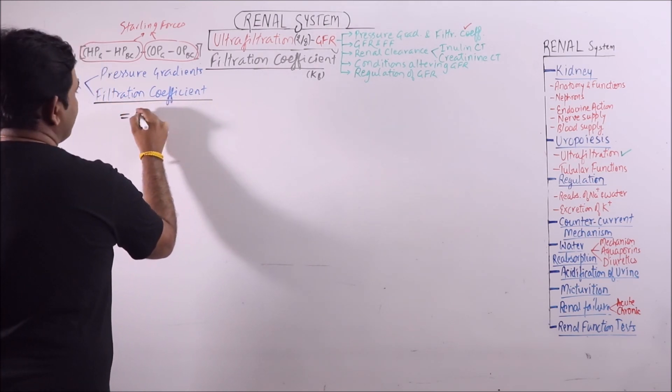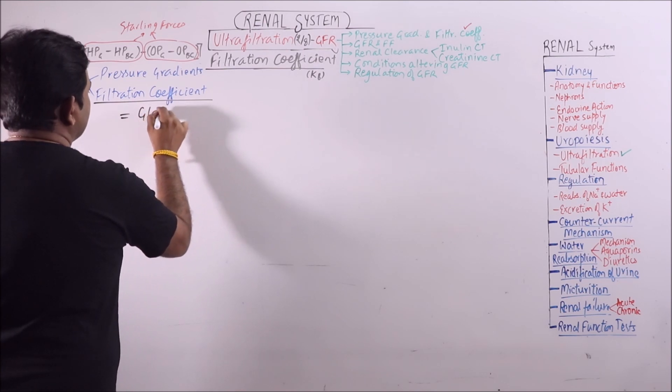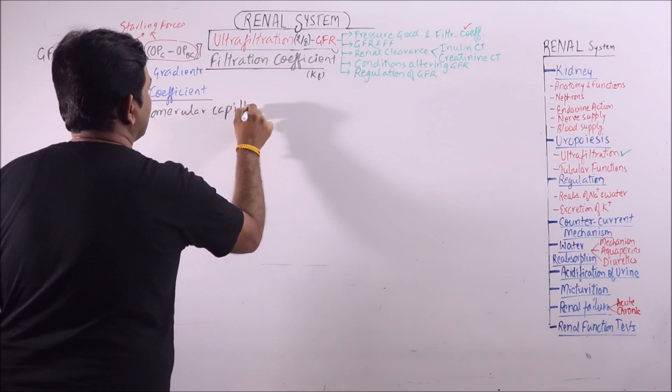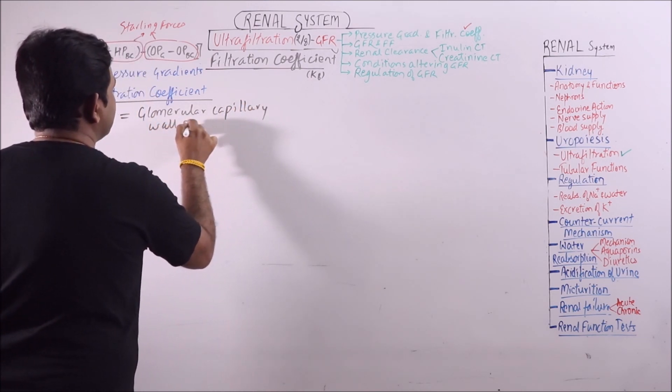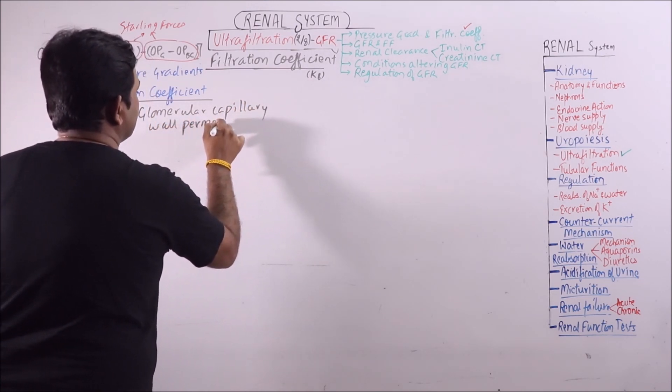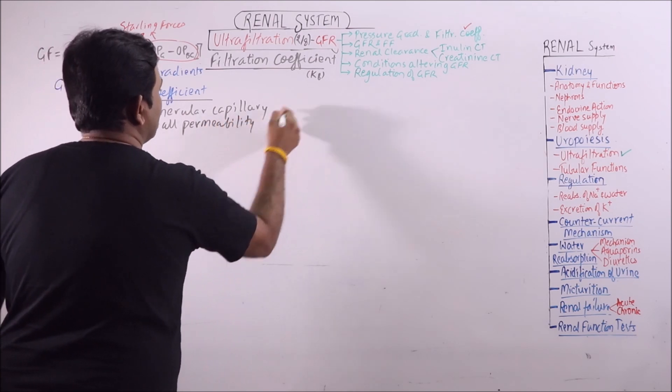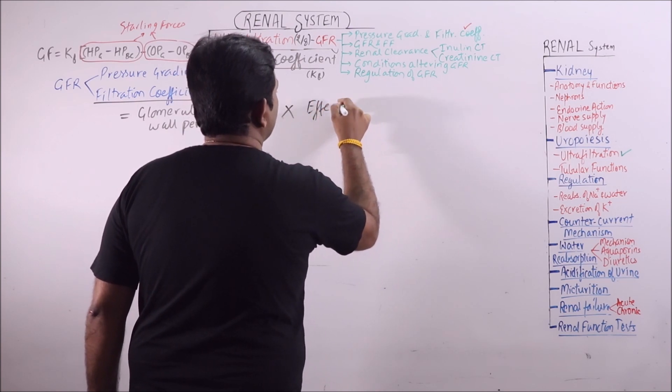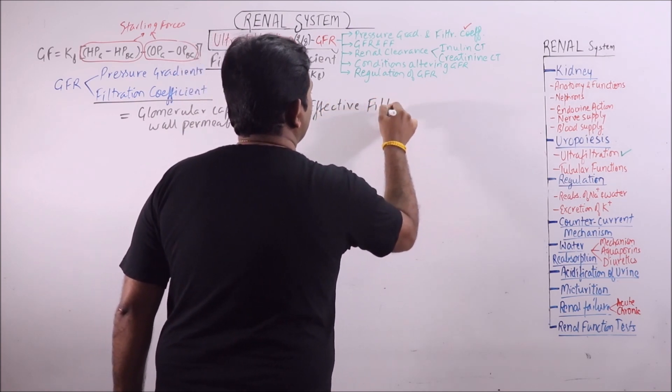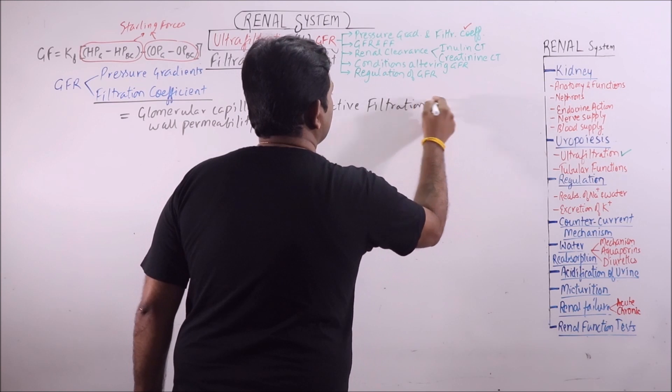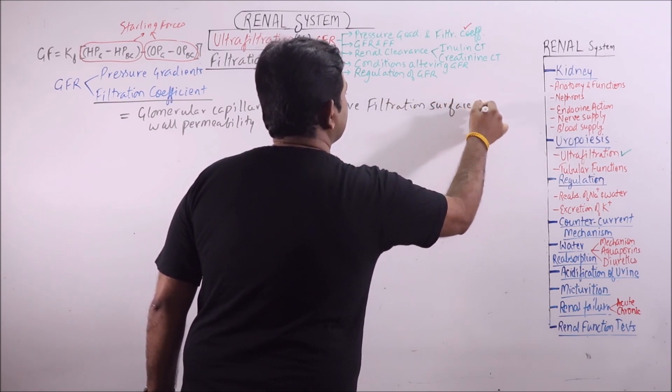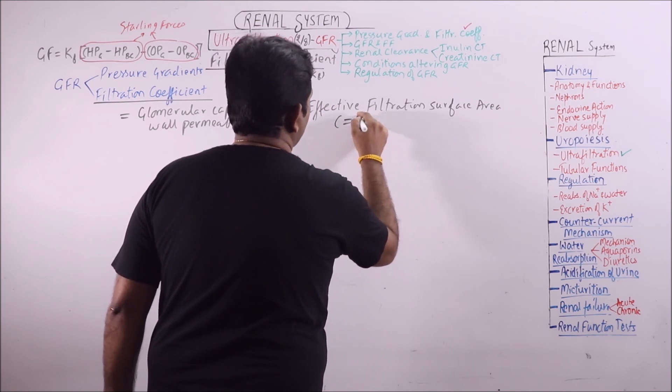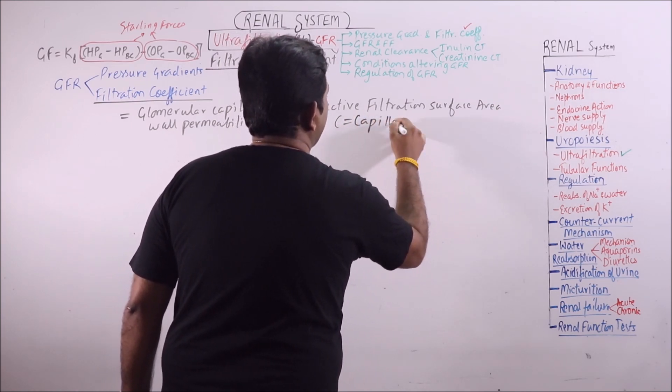This is basically a product of glomerular capillary wall permeability and the effective filtration surface area. It represents the size of capillary bed.